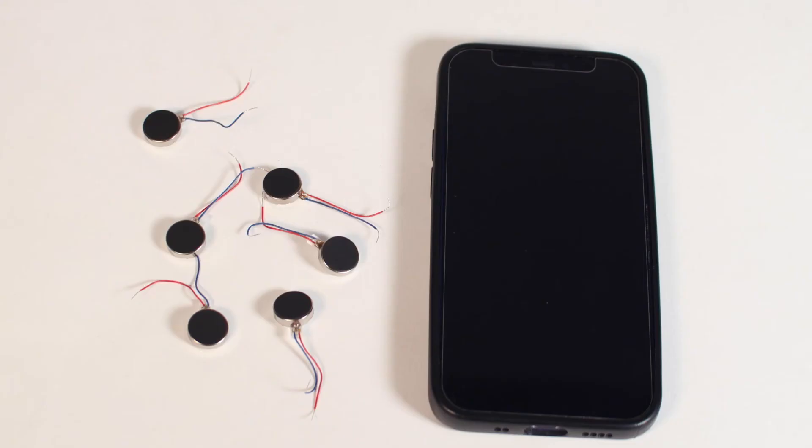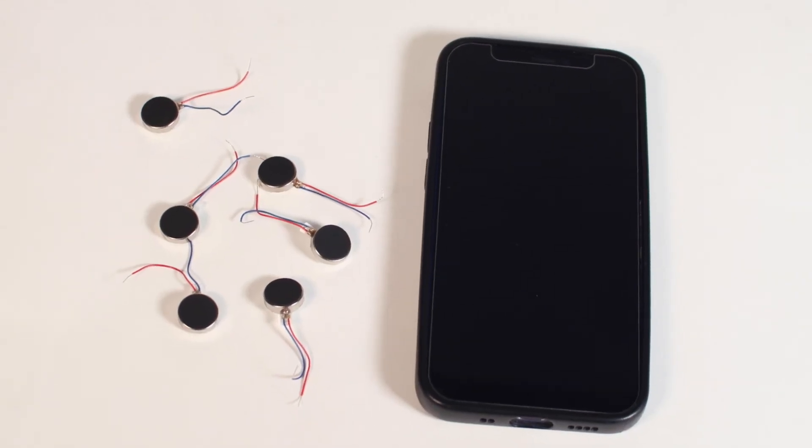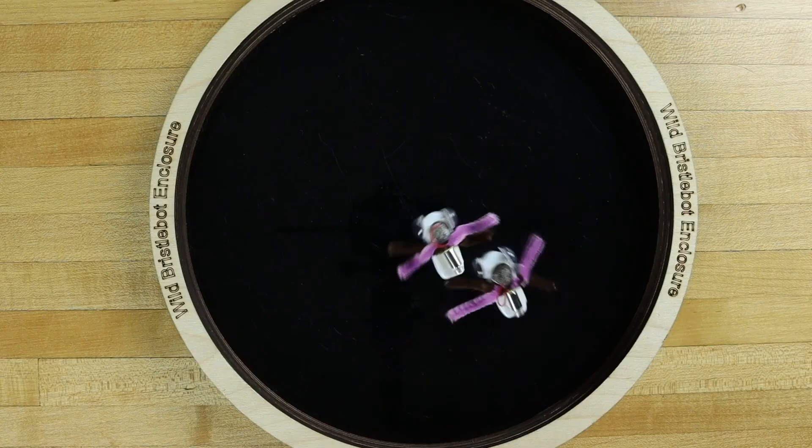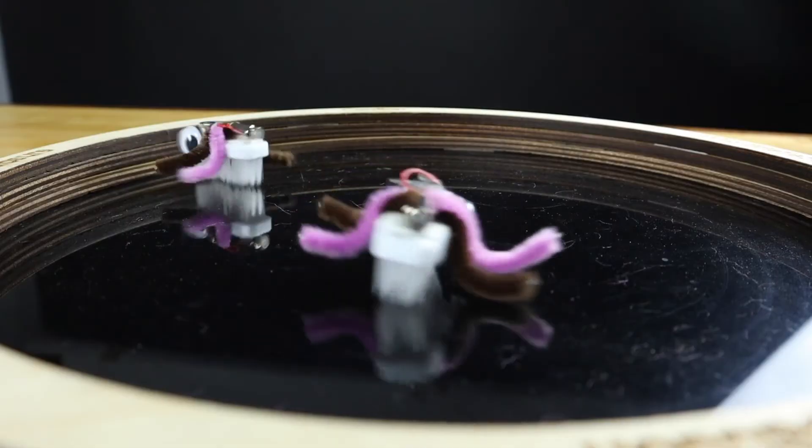This is done on purpose to make vibrating motors. Small ones are placed in cell phones to make them vibrate. We can also use them in fun projects to make them move around, like these bristlebots.